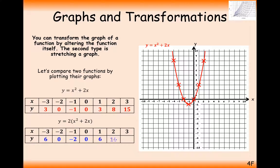What you'll notice is that all of the y-coordinates have doubled. The negative y-coordinates have got further into the negative values, and the positive y values are now double as large. Plotting these coordinates, we get this graph here. The red graph has stretched outwards or upwards from the x-axis. We're taking the x-axis as effectively our centre of enlargement. It's stretched downwards by a scale factor of 2, and if it's stretched upwards, then it's stretched upwards by a factor of 2 as well.